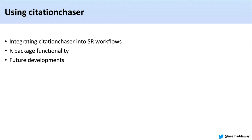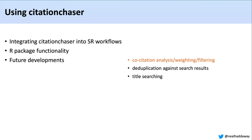We have some future developments that we hope will make Citation Chaser even more user friendly. We're hoping to develop co-citation analysis, weighting, or filtering so that people can explore their forwards and backwards citation chasing results to see which records were most frequent within their network. Already in the Citation Chaser test beta version, you can have a basic look at that frequency analysis, which we'll be developing further in the future.